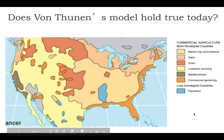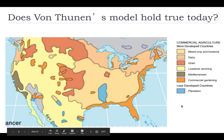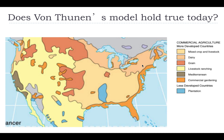Does it hold true today? Yes and no. One way it applies is dairy farming, which historically is located near the markets. Our largest population is in the Northeast, so that is a true fact today. When we look at grain, our lower arithmetic density has historically been in the West, where there is lots of land available for grazing animals — fitting that fourth ring.